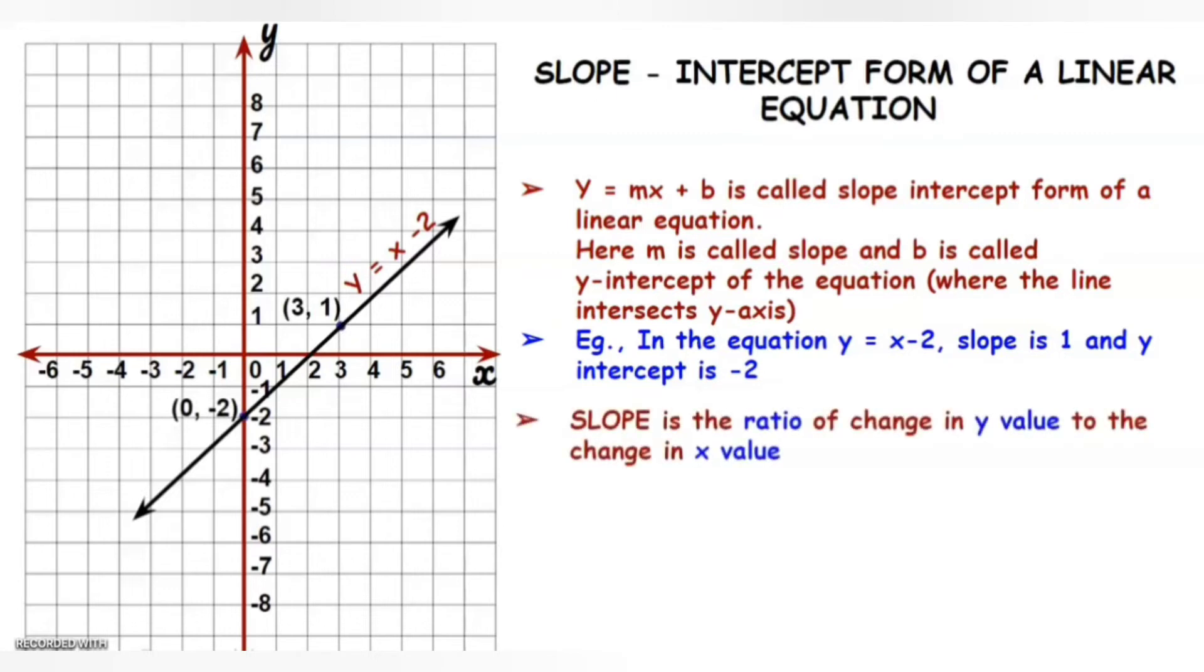Now, what is the definition of a slope? Slope is the ratio of change in y value to the change in x value for any two points on the line.